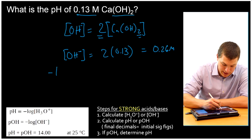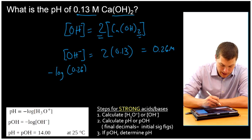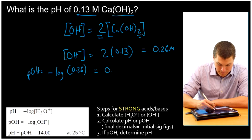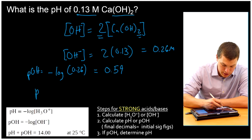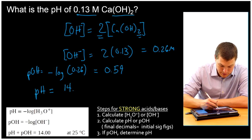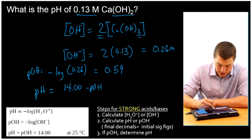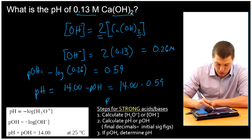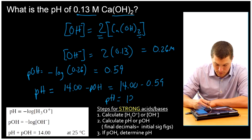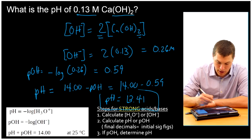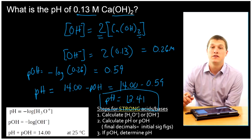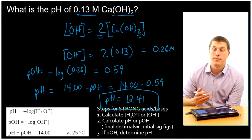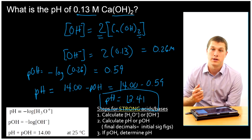And then once again, I'm going to take the negative log of 0.26 molar to get my pOH. And that is 0.59. And then once again, I'm going to know that pH is equal to 14.00 minus pOH, if you go ahead and rearrange that equation, which is 14.00 minus 0.59 for a final pH of 13.41. So that is the pH of my calcium hydroxide. So because each of my calcium hydroxide ions has two hydroxide ions in it, that actually is going to increase the hydroxide concentration because it's going to pull more of those hydrogen ions out of solution.